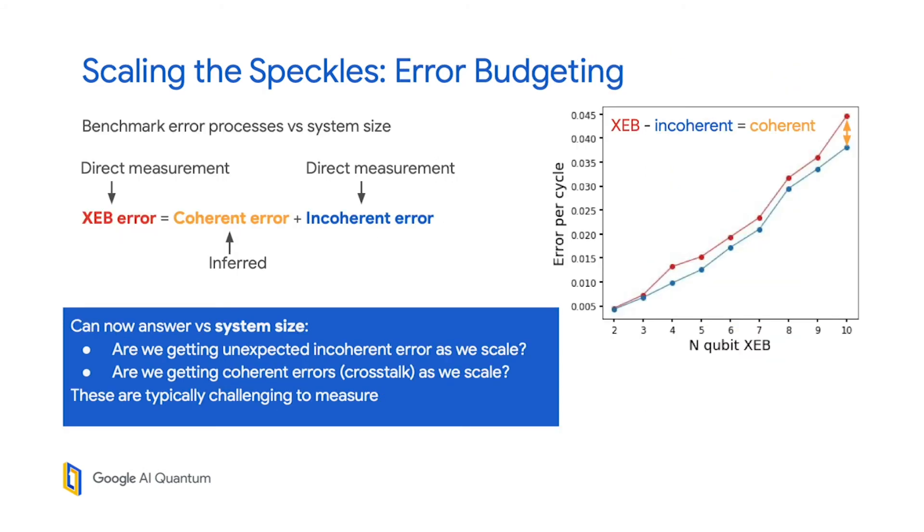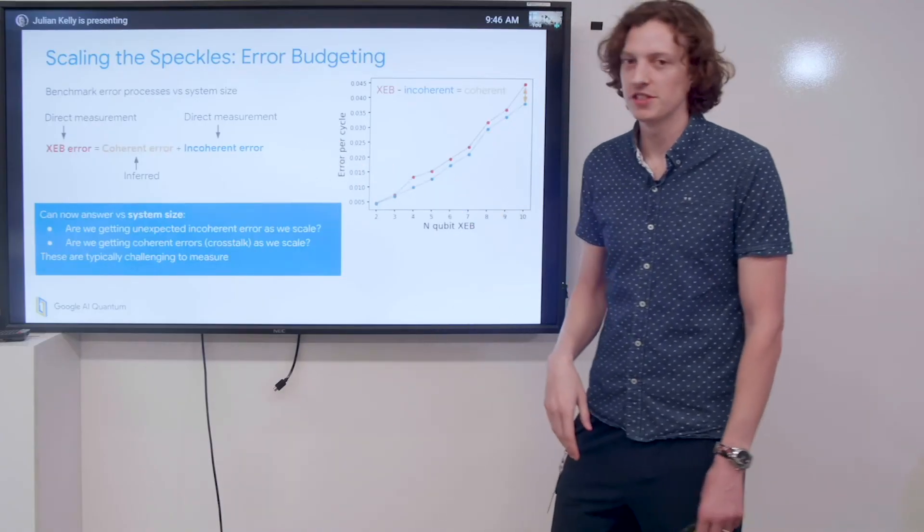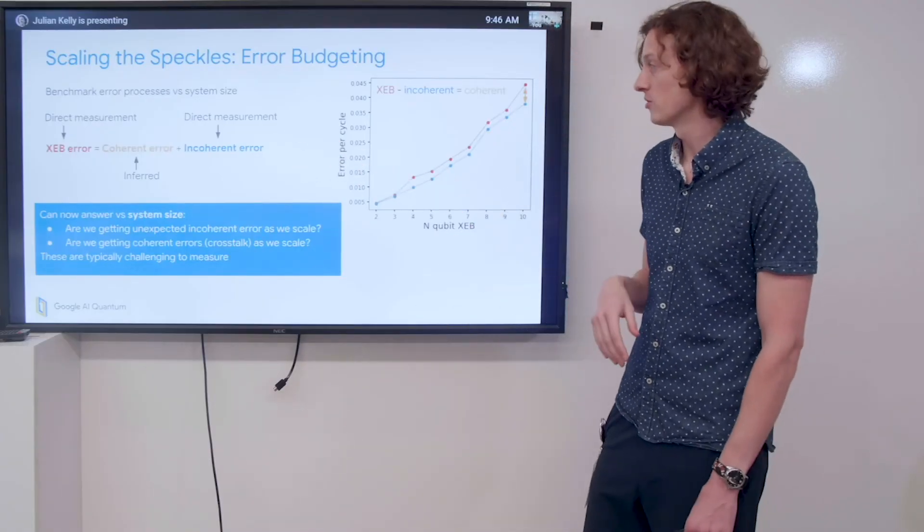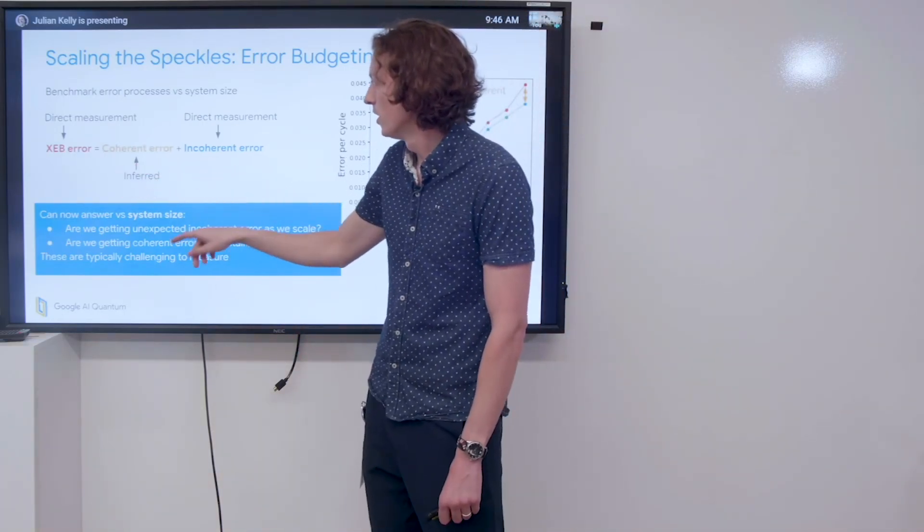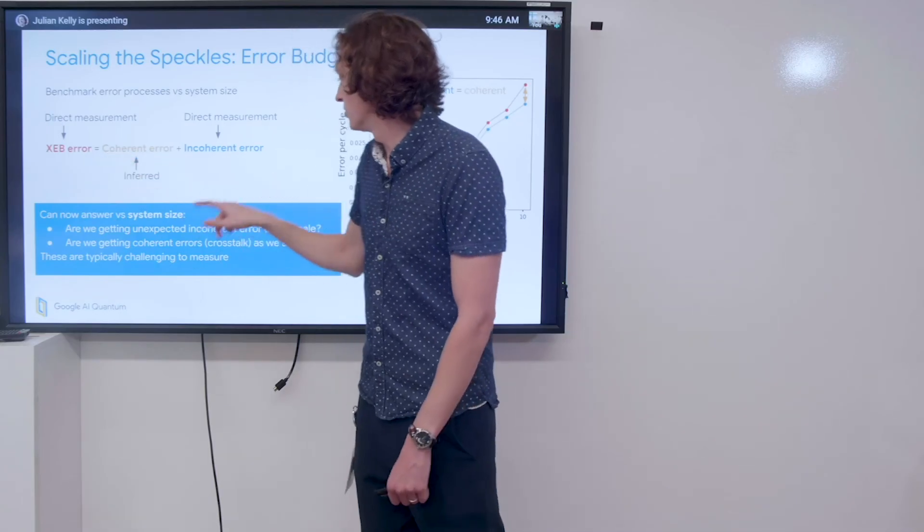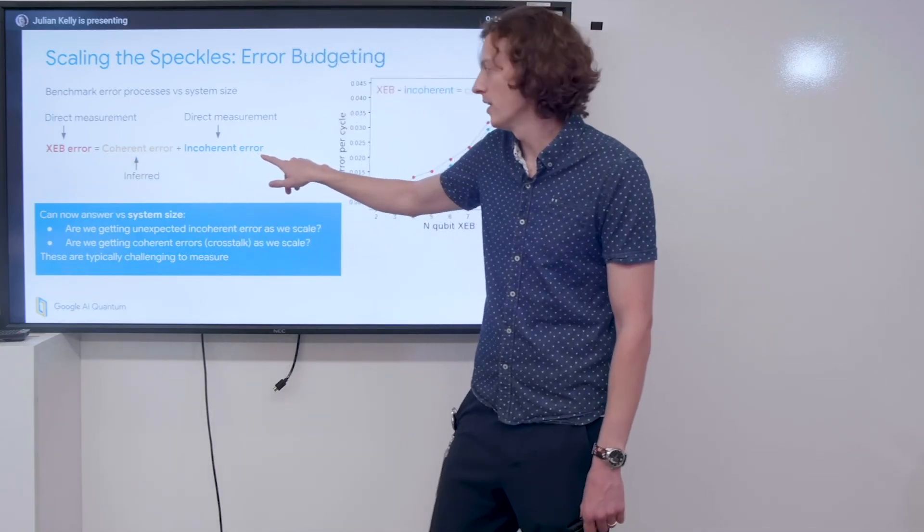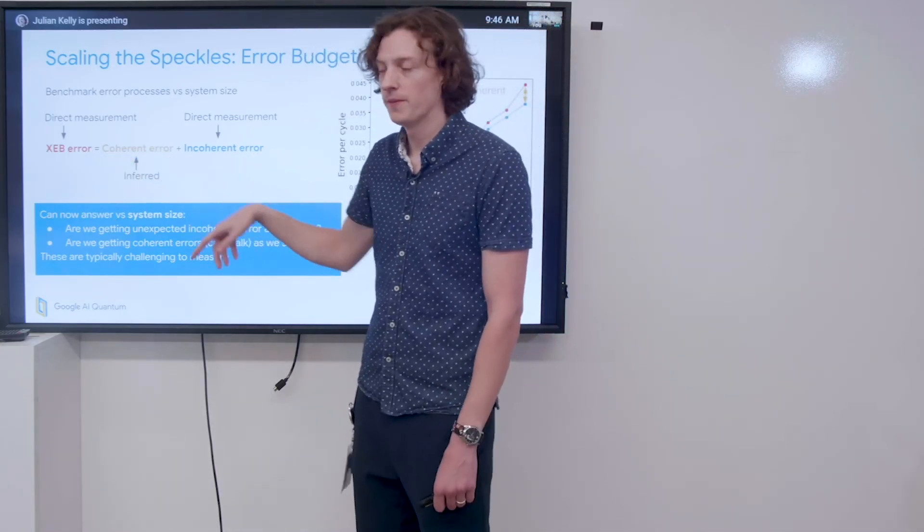The last thing we can do is some pretty cool error budgeting. We can benchmark the different error processes versus system size using the data that I just showed. If we say the XEB error equals the incoherent error plus the coherent error, we directly measure the XEB error and we directly measure the incoherent error, the purity. That allows us to infer the coherent error.